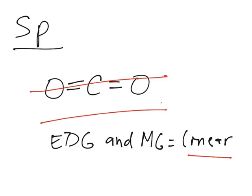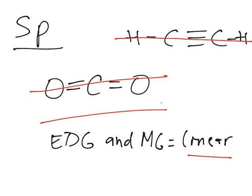Those are the molecular geometry and electron domain geometry names for each of the main hybrid orbitals. I'll be solving practice problems in the following video to help with recognition. Hybridization needs practice, and looking at big molecules and identifying different hybridizations can sometimes be hard, but practice makes it easier. If you found the video helpful, like it and share it with your friends.